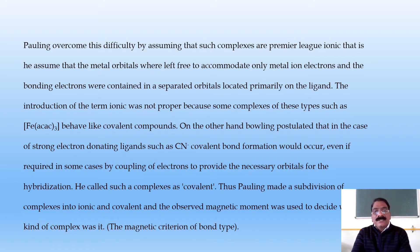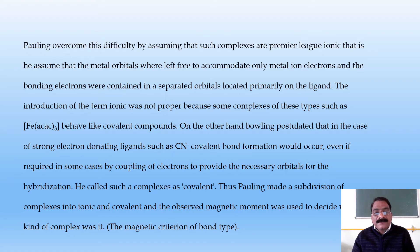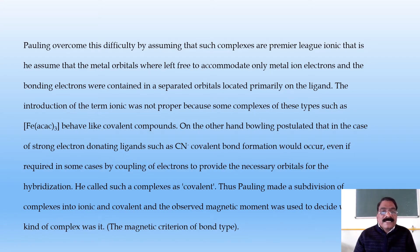Pauling called such complexes 'covalent' and made a subdivision of complexes into ionic and covalent. The observed magnetic moment was used to decide which kind of complex it was — this became known as the magnetic criteria of bond type.